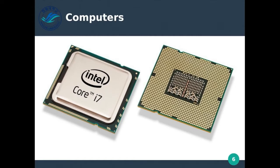The graphics card processes and interprets that output and sends it to your screen. Or if you move your mouse, the processor says the mouse is moving and moves it on screen as well. So the processor basically computes and commands everything in the computer — what it should do and how it should work.